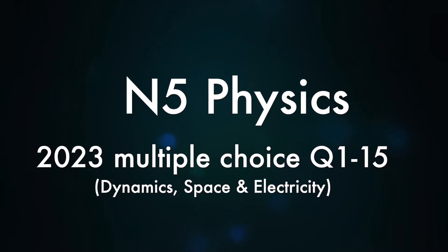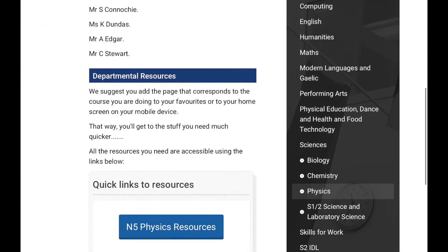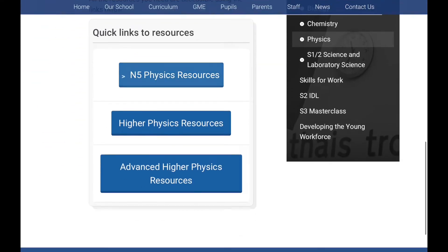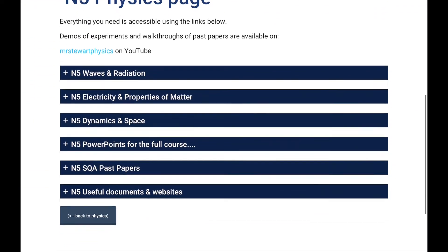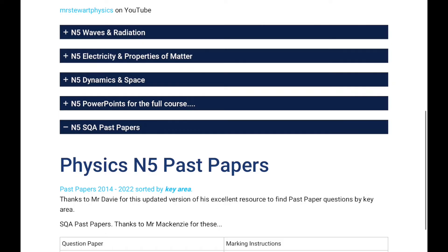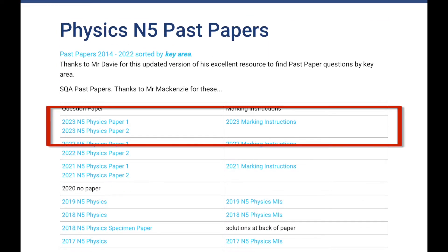Okay everybody, welcome back to another National Five Physics past paper walkthrough. This time it's the 2023 multiple choice paper. There's loads of places you can find this paper, including the SQA website, but I'm going to go to our website, that's the Calder Glen High School physics webpage. I'm going to click on National Five past papers.